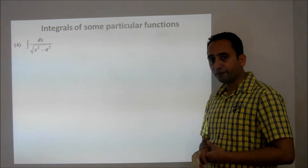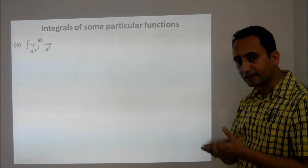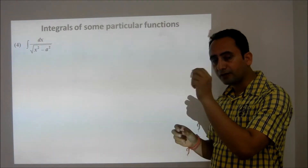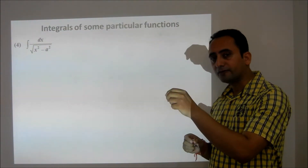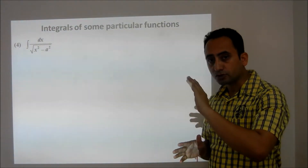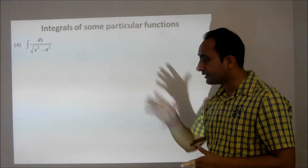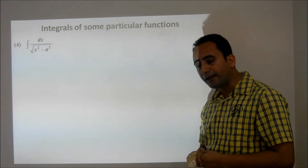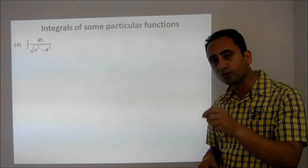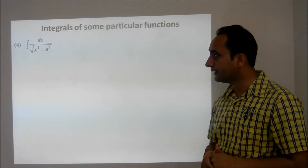Now, what is the difference between the first three and the last three integrals? In the first three, it was in the form of a constant upon a quadratic function with no square root sign in the denominator. But in the next three particular integrals, the denominator will be a square root of a quadratic function. Let us discuss them one by one, starting with the integral of 1 upon root of x squared minus a squared.